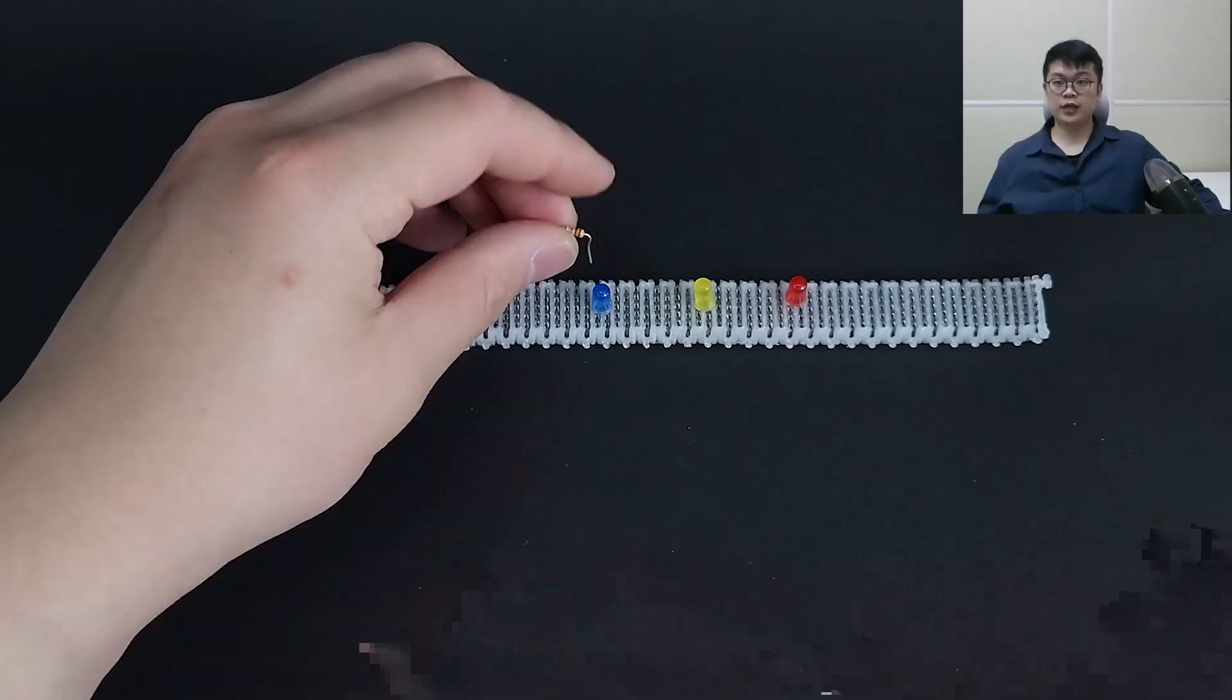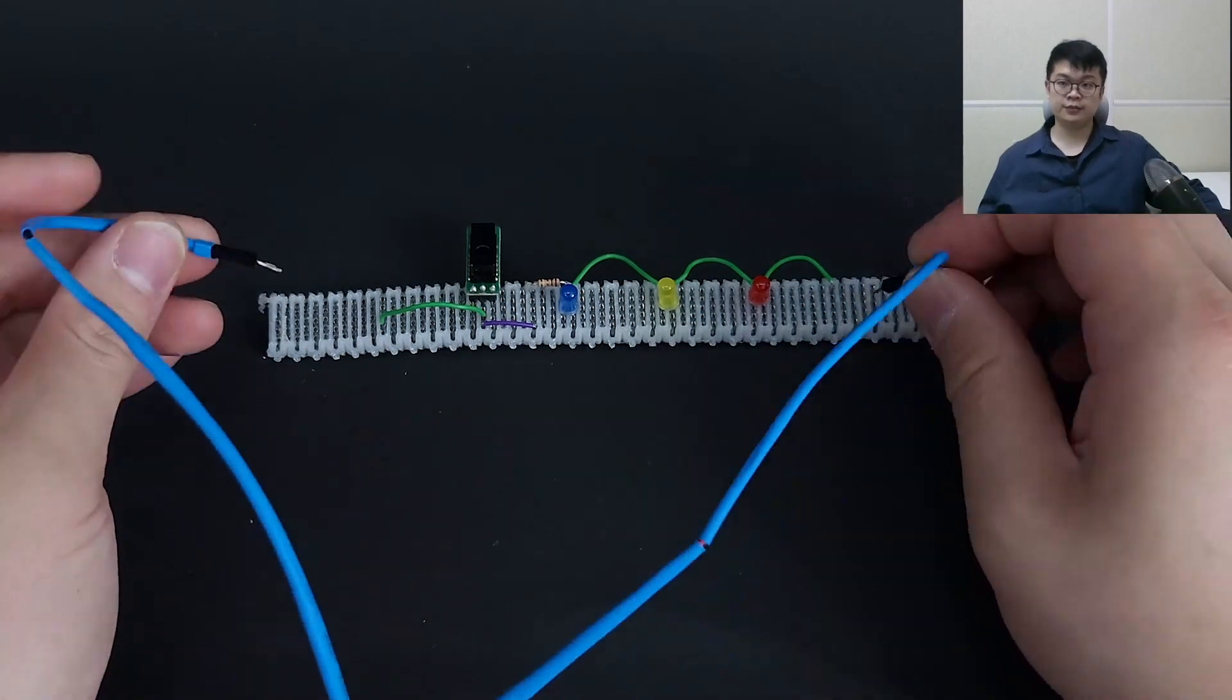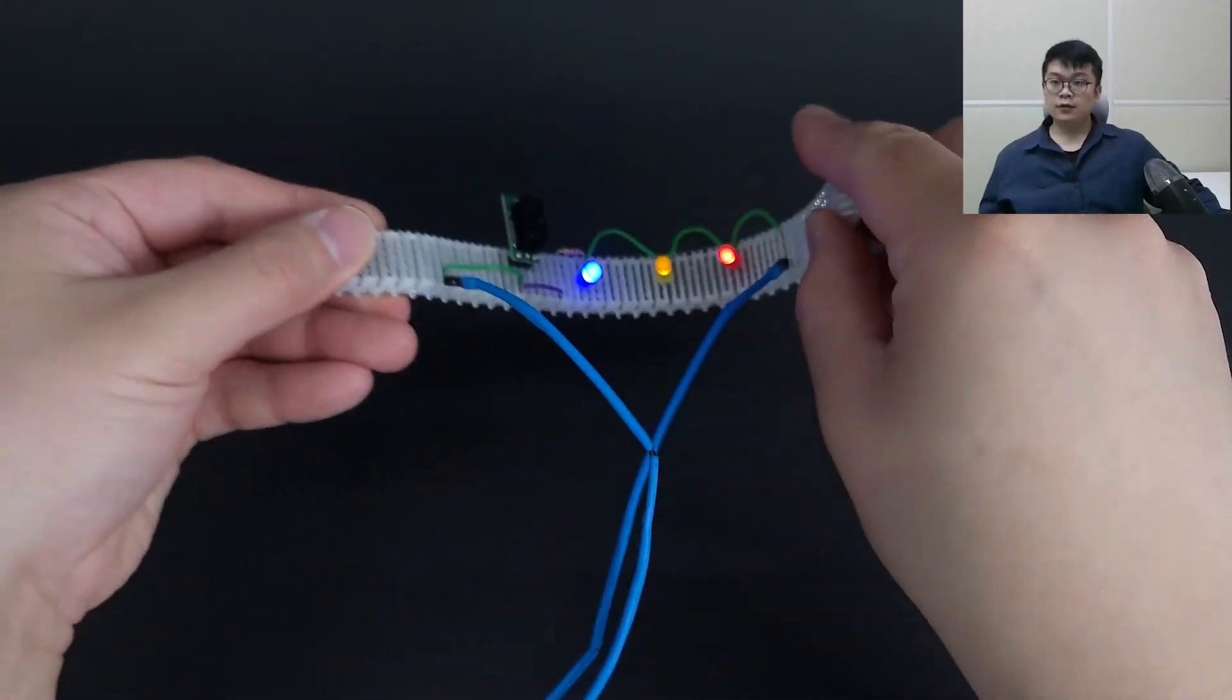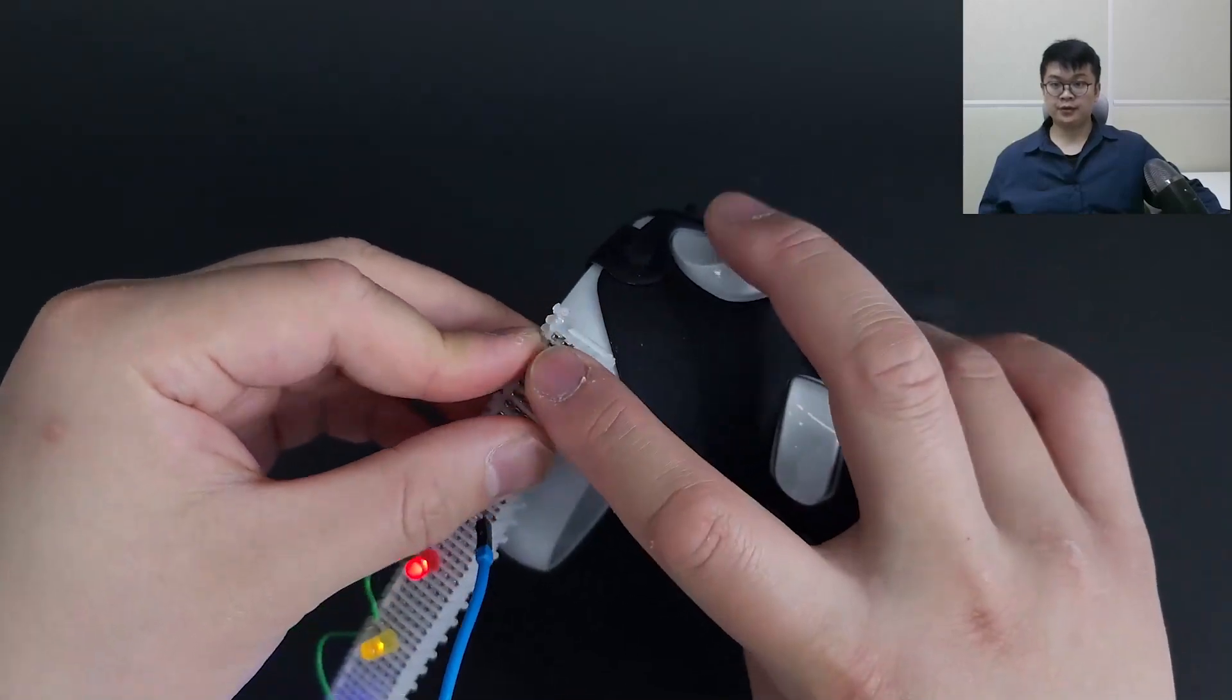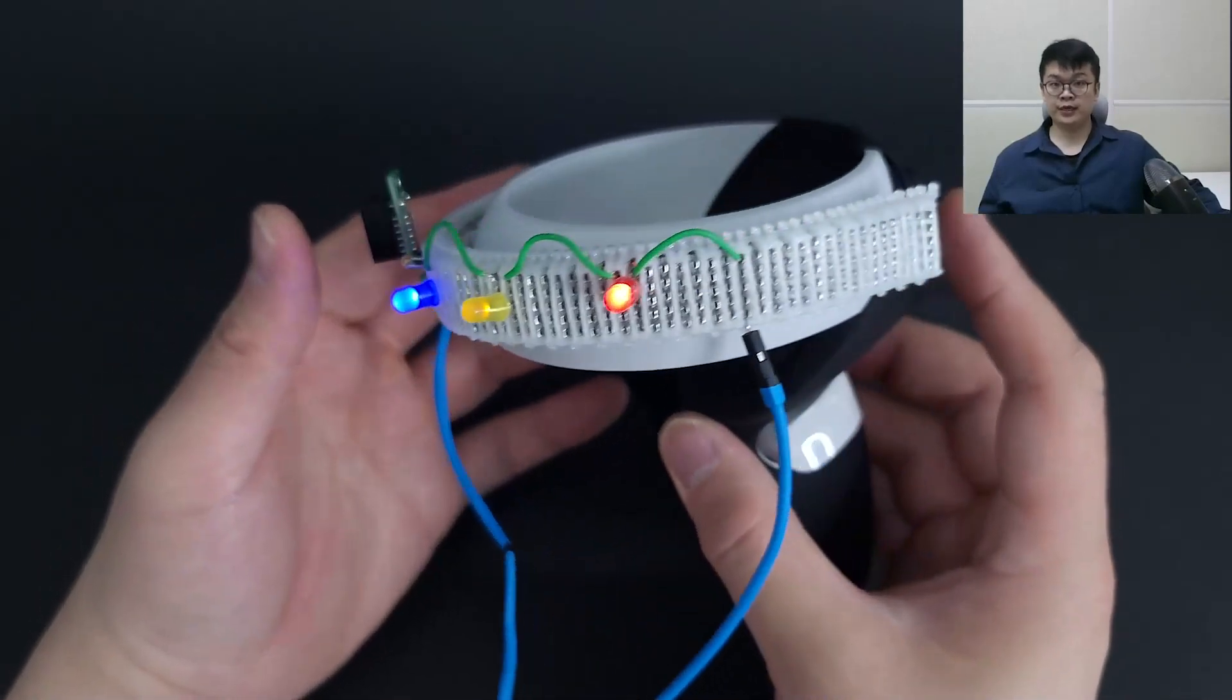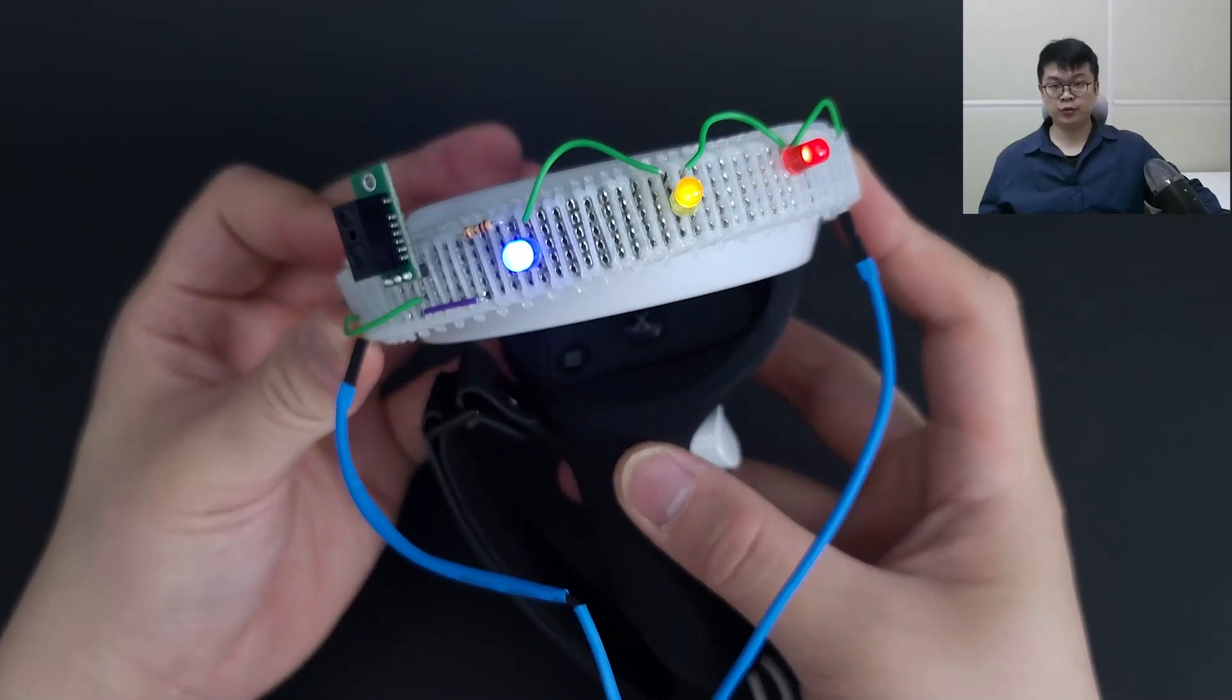FlexBoard enables prototyping with interactive components like various sensors, LEDs, and displays similar to a traditional breadboard, while also being highly flexible. This enables FlexBoard to be used in interaction prototyping. FlexBoards can be bent around curved geometries and let makers place input and output components at their preferred location in an angle that fits to the base geometry.